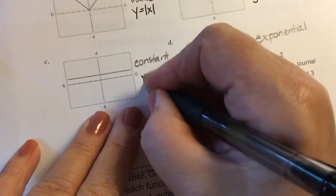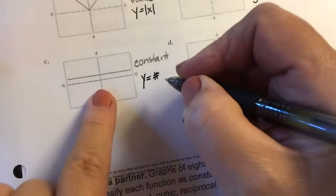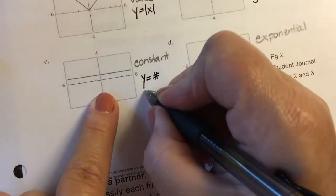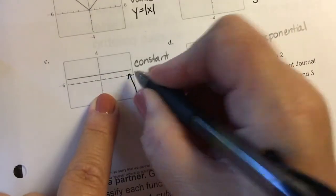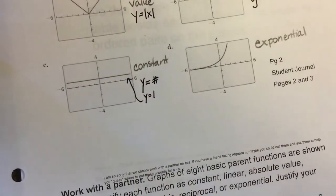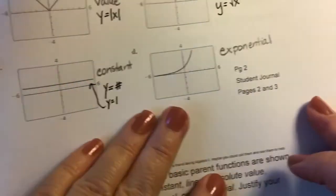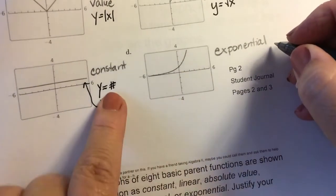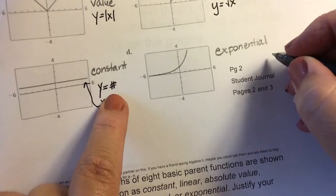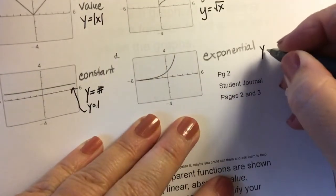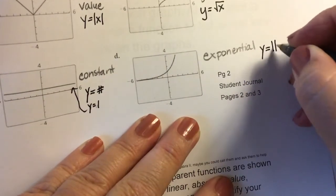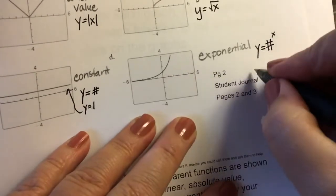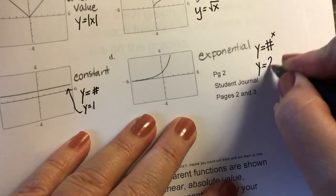A constant function is y equals any number. In this picture I believe the constant is 1, so for this picture y equals 1. We'll call that the parent function for this particular problem. Then an exponential function has a pattern, you usually have y equals a number raised to a variable. We're going to use the equation y equals 2 to the x power for this one. We'll call that our parent function for now.